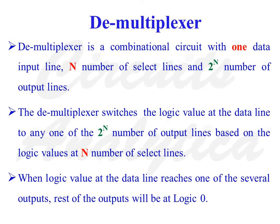Let us start our discussion with the demultiplexer. Basically, a demultiplexer is a combinational circuit with one data input line, n number of select lines, and 2 raised to n number of output lines. The demultiplexer switches the logic value at the data line to any one of the 2 raised to n output lines based on the logic values at the n select lines.